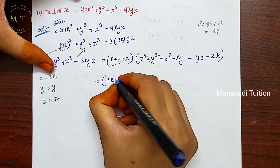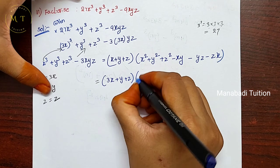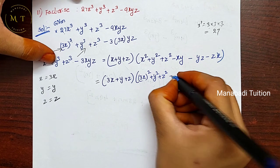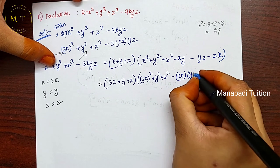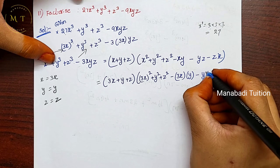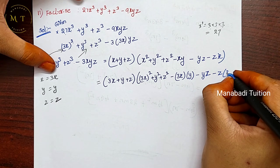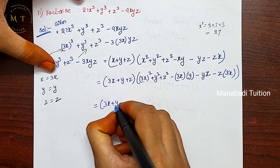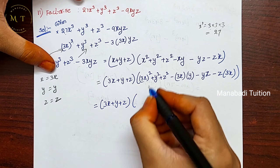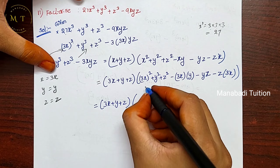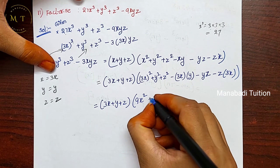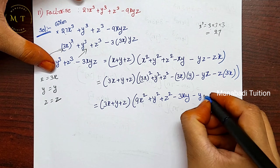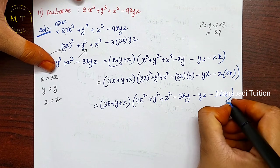Substituting: (3x + y + z) into (3x)² + y² + z² - (3x)(y) - yz - z(3x), which gives (3x + y + z)(9x² + y² + z² - 3xy - yz - 3zx).